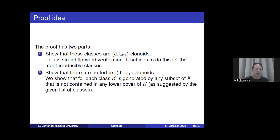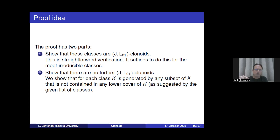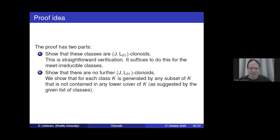We show there are no further clonoids by showing that each set of Boolean functions must generate one of the classes described here. We do this by considering each of those classes and taking any subset of that class not contained in any of its proper subclasses or lower covers — that set must generate the given class. This is the more difficult part of the proof; I'm not going to go into the details in this talk.